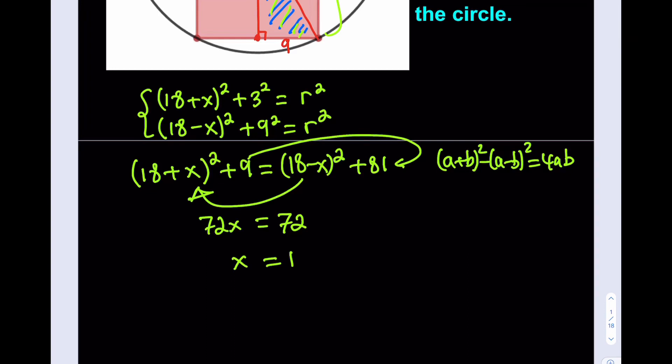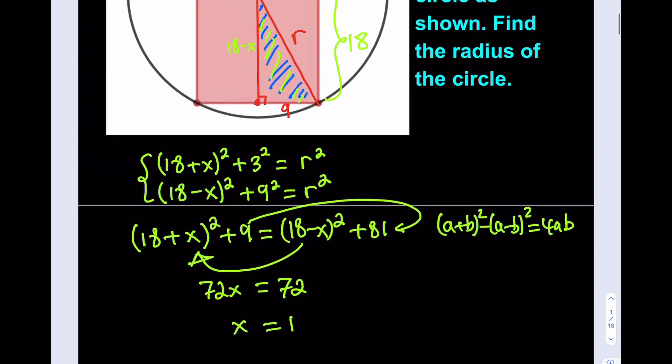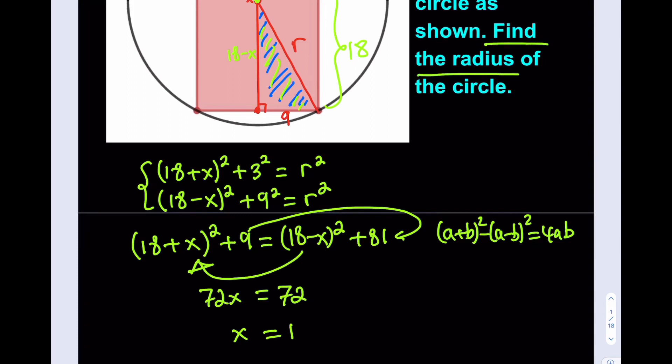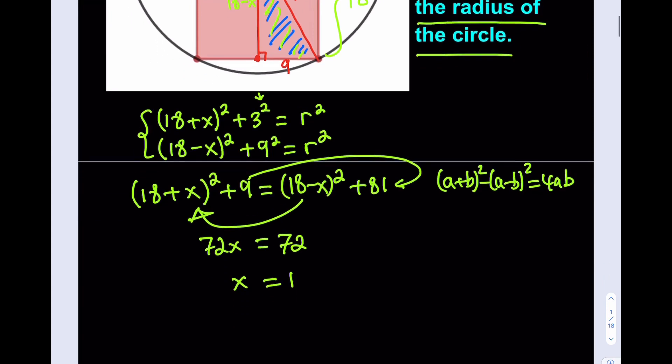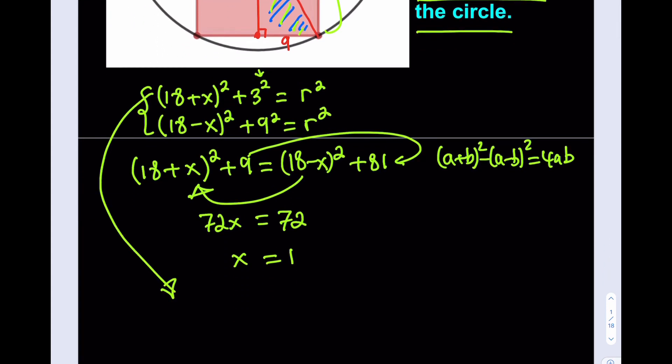But we're not looking for X. What are we looking for? We are looking for the radius. It says find the radius of the circle. Which equation am I going to use? Does it matter? Nope, it doesn't. Whichever equation you like better, use that one. Let me use the top one because that one seems a little better because of the sizes like 3 squared. It seems a little more friendly. 18 plus 1 is what? 19 squared.